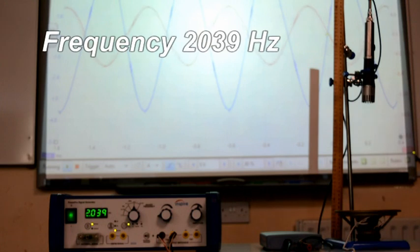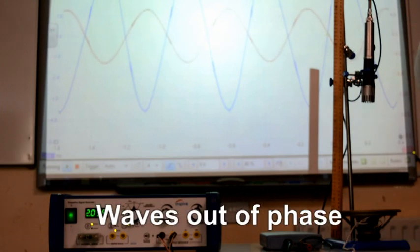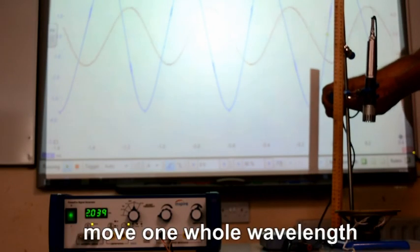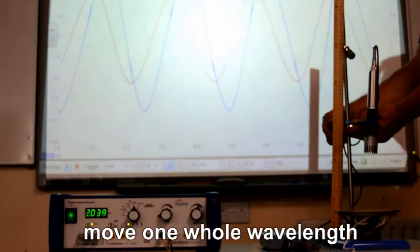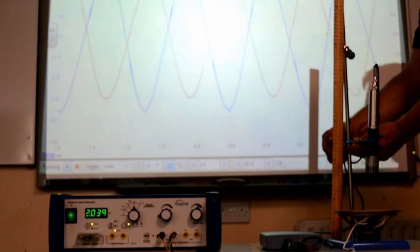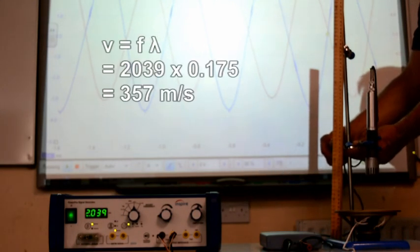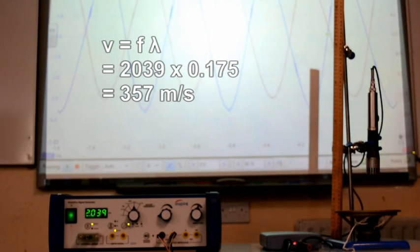Now at 2000 Hz we can repeat the process. Moving the microphone until the screen clearly shows the wave has moved one entire wavelength. This time the speed of sound is 357 m per second.